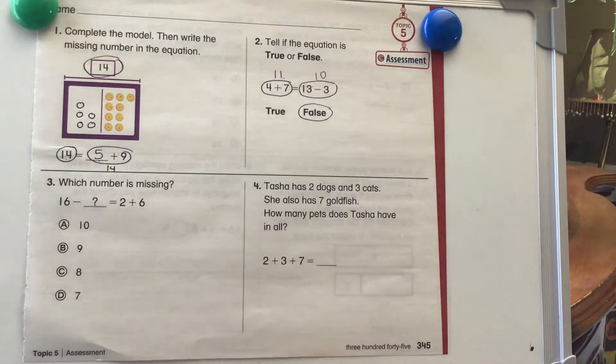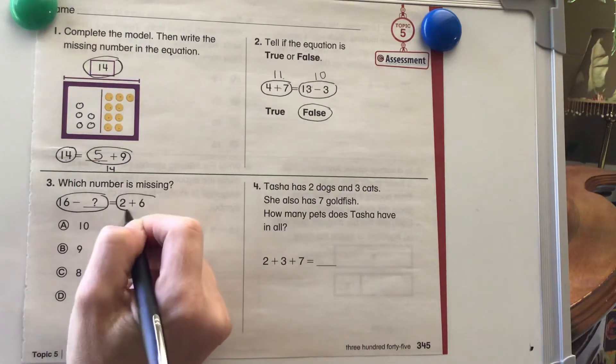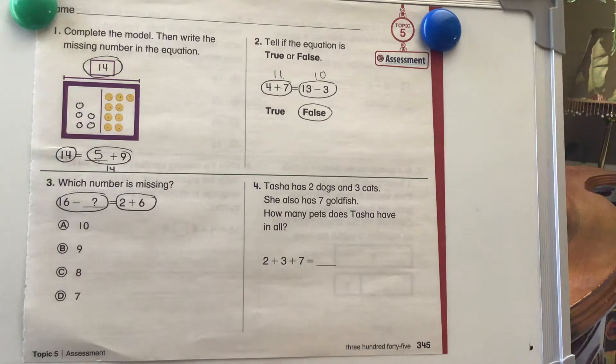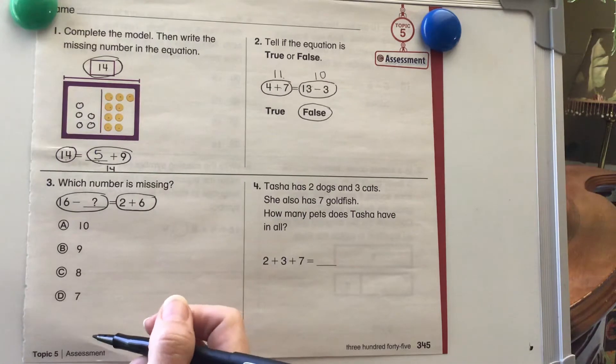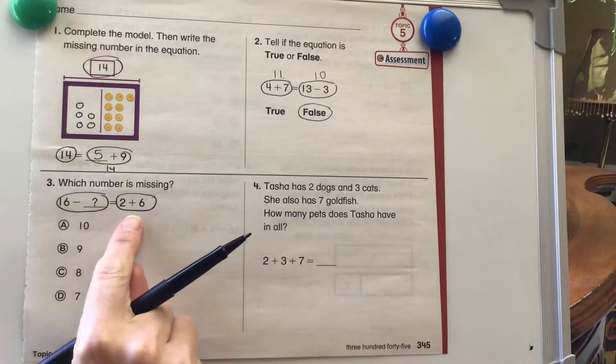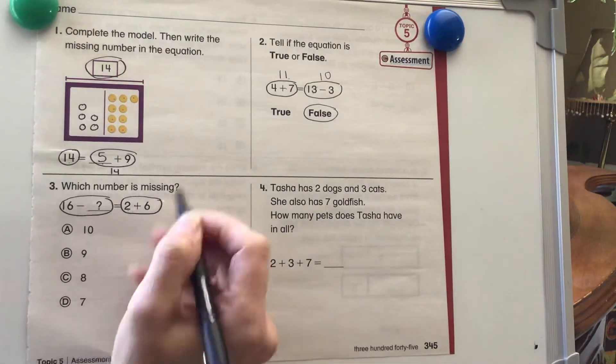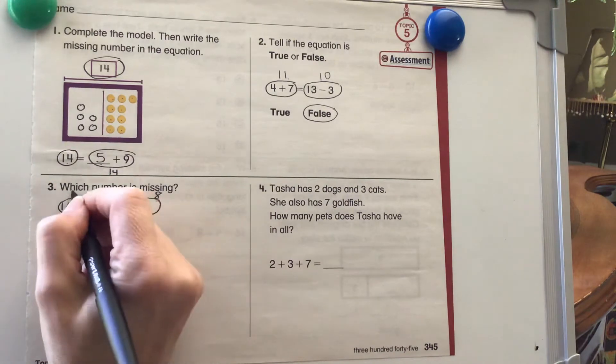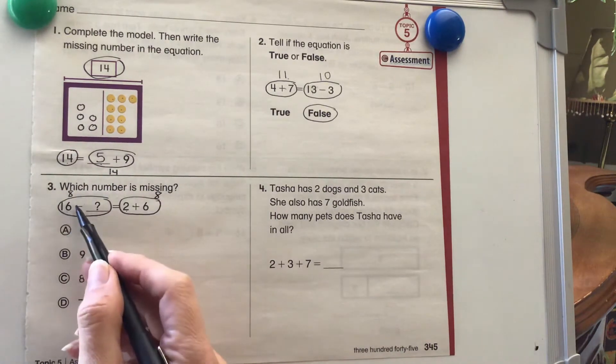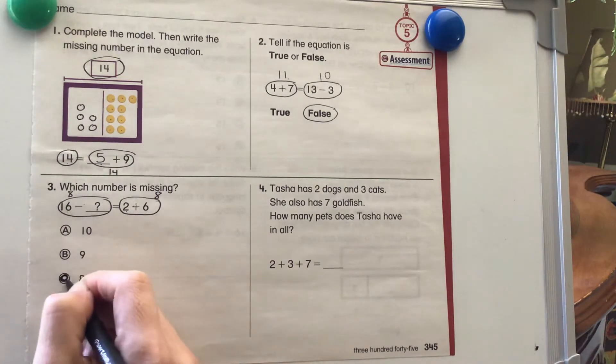Let's take a look at which number is missing. 16 minus something is the same as 2 plus 6. We need to make sure that this value is the same as this number or value. I know that 2 plus 6 equals 8. So 16 minus something must also equal 8. 16 minus what equals 8? I know that 16 minus 8 equals 8.